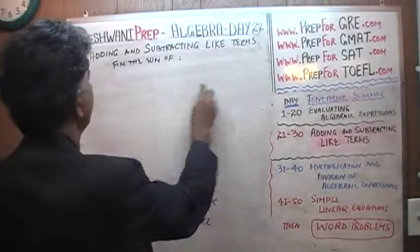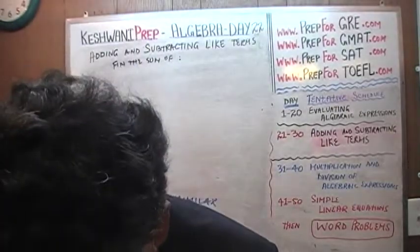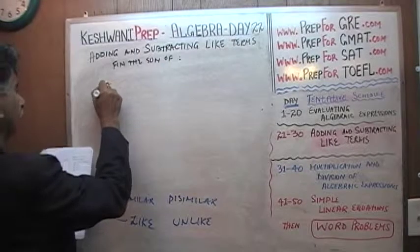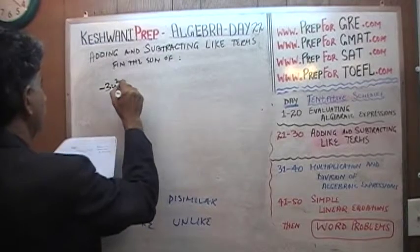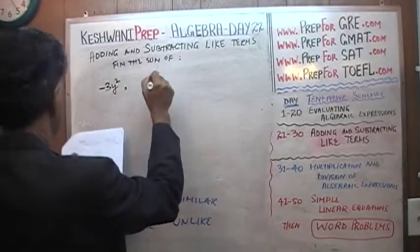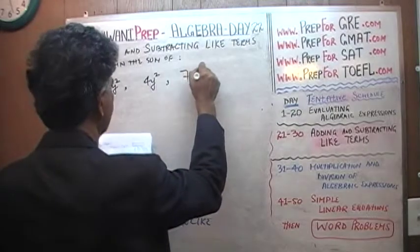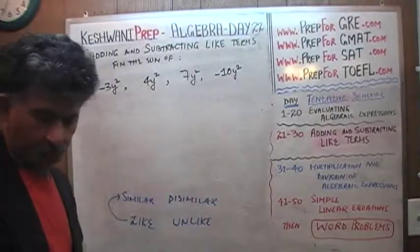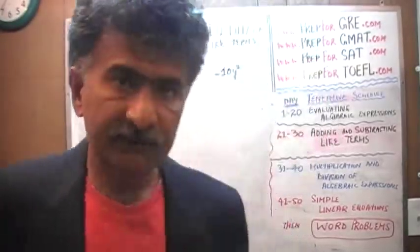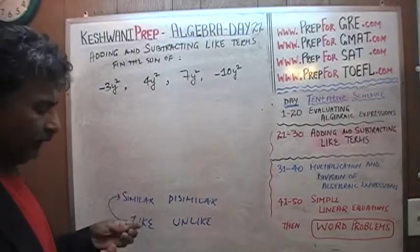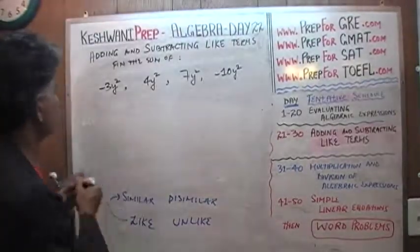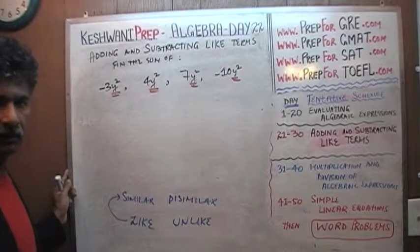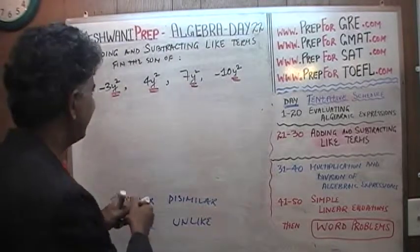Let's do one more. Find the sum of negative 3y squared, 4y squared, 7y squared, and negative 10y squared. Again, they all happen to be like terms — similar terms — because they all contain y squared and nothing else. Since they are all like terms, all we have to do is add the coefficients.